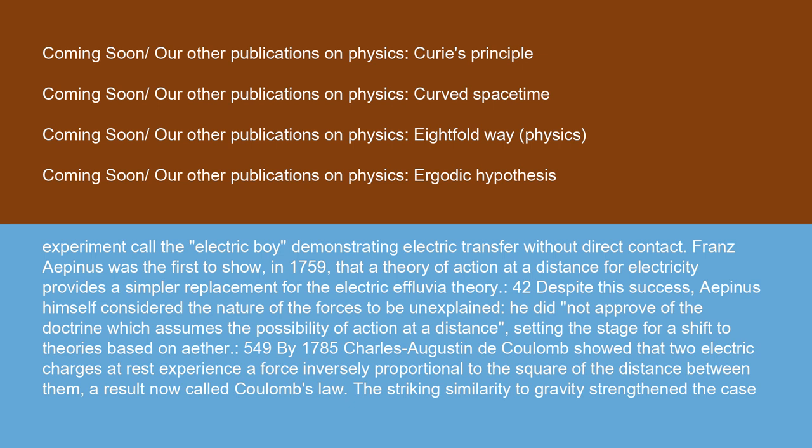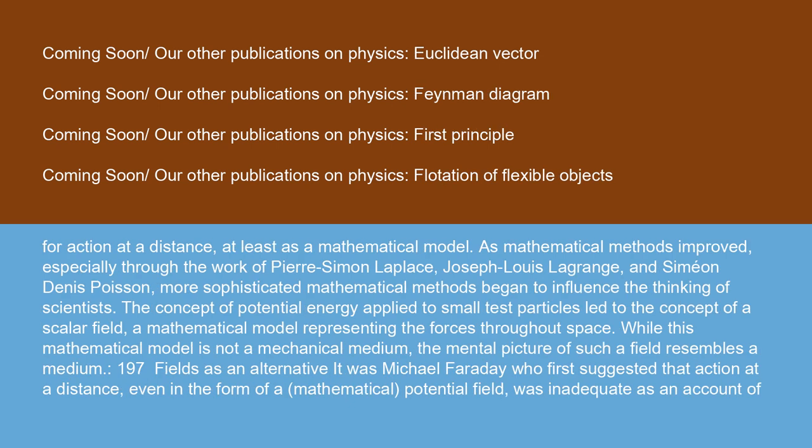By 1785, Charles Augustin de Coulomb showed that two electric charges at rest experience a force inversely proportional to the square of the distance between them, a result now called Coulomb's law. The striking similarity to gravity strengthened the case for action at a distance, at least as a mathematical model. As mathematical methods improved, especially through the work of Pierre-Simon Laplace, Joseph Louis Lagrange, and Siméon Denis Poisson, more sophisticated mathematical methods began to influence the thinking of scientists. The concept of potential energy applied to small test particles led to the concept of a scalar field, a mathematical model representing the forces throughout space. While this mathematical model is not a mechanical medium, the mental picture of such a field resembles a medium.